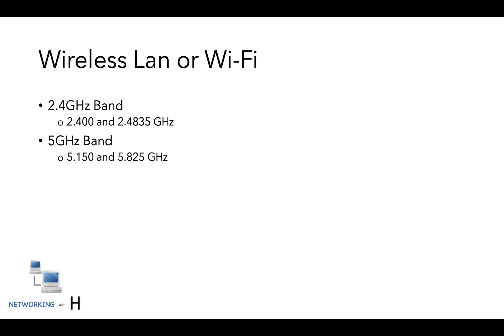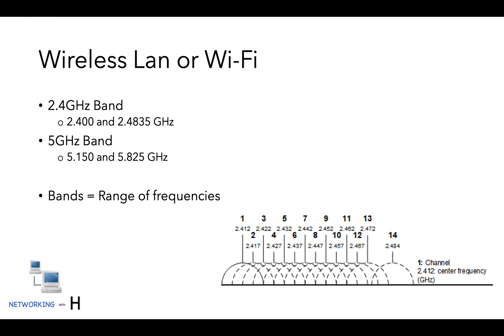Bands are nothing but a range of frequencies. Wireless bands can be further broken down into channels. In case of wireless LAN we call it Wi-Fi channels. These channels can overlap and cause interference.